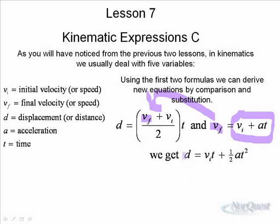When we simplify that, we still have d on the left. What we'll end up with is VIt plus one half at squared. So it's just another way of deriving a new equation. Now we have three equations. We've got a equals VF minus VI over t, d equals VF plus VI over 2 times t, and now we have a third equation.